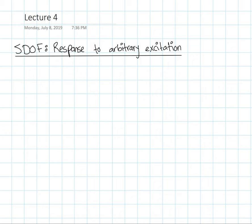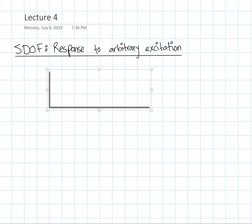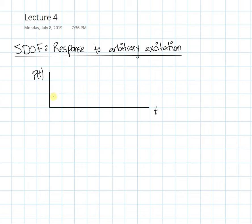Today we're discussing response to arbitrary excitations when it comes to single degree of freedom systems. As we think about the different types of forces that can be applied to a structural system, we can realize that not all forces tend to be straightforward and easy to analyze. Some forces are harmonic, some can be step forces, ramp forces, but forces can have any arbitrary shape. So the question we want to ask is: what if I have a force function that has any arbitrary shape?